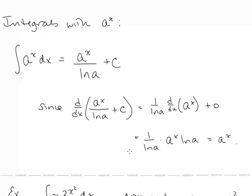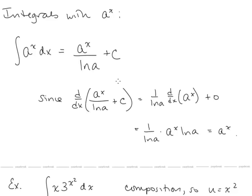Now let's look at integrals with a to the x. We know that taking the derivative of a to the x multiplies by a factor of ln a, so taking the antiderivative of a to the x divides by ln a. The integral of a to the x equals a to the x over ln a, plus a constant. We can check: the derivative of a to the x over ln a is 1 over ln a times a to the x ln a, and the factors of ln a cancel, leaving a to the x.